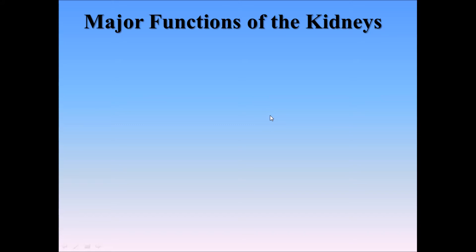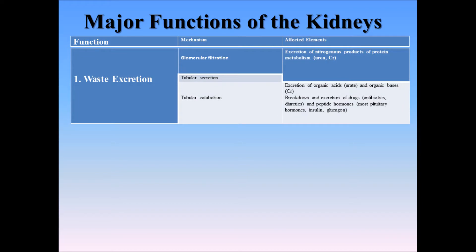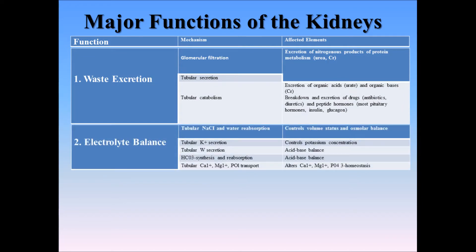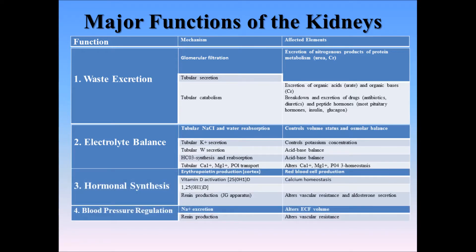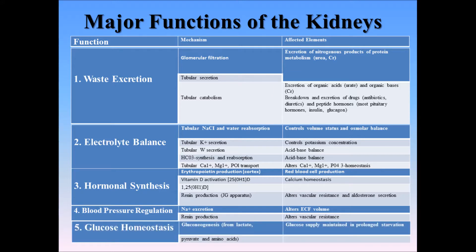Now, if we classify the functions of the kidneys, we could say there are five: first is waste excretion, second is electrolyte balance, third is hormonal synthesis, fourth is blood pressure regulation, and the last one is glucose homeostasis. As you can see, for every single one of these functions there are several mechanisms and a couple of involved elements.